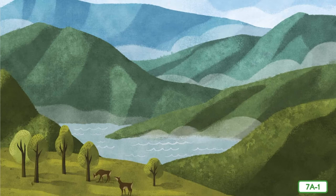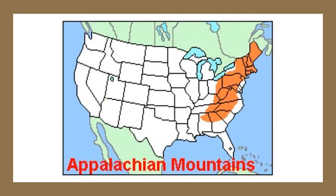Engineers who planned the C&O Railroad had to overcome many challenges to get trains from the Chesapeake Bay to the Ohio River. Engineers at that time were people who made engines like train engines, but also people who ran or drove the train engines — so the word engineers can be used in a couple of different ways. No challenge was greater than this: they had to run their tracks through the Appalachian Mountains, which were like a big wall separating the east from the west.